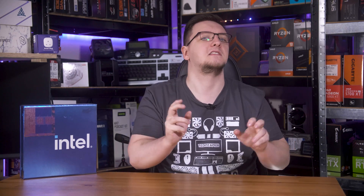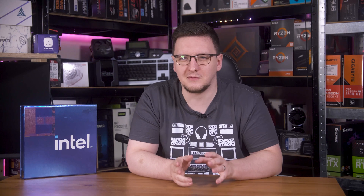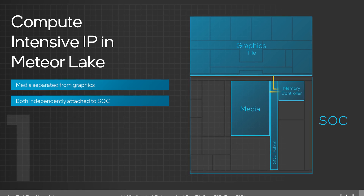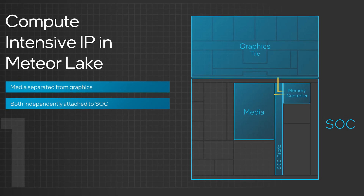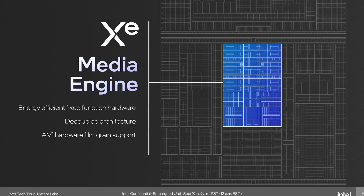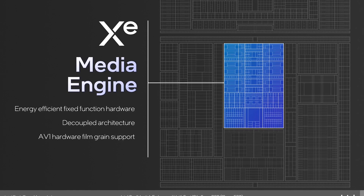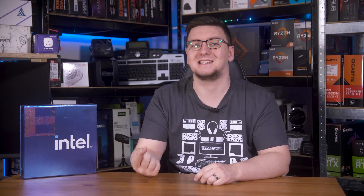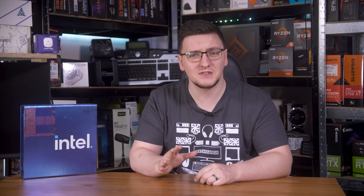Jumping back to the SOC tile, which is by far the most interesting part — beyond the NPU and the Island E-cores — what's most interesting is the inclusion of the media engine in the SOC tile. That's the encoder and decoder normally found as part of the graphics core, but now it's in the SOC tile, meaning every single Meteor Lake chip, F-SKU or not, regardless of whether the chip has a graphics tile, will have an H.264, H.265, and AV1 encoder and decoder built in. That's frankly huge.